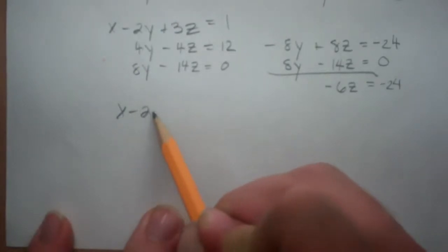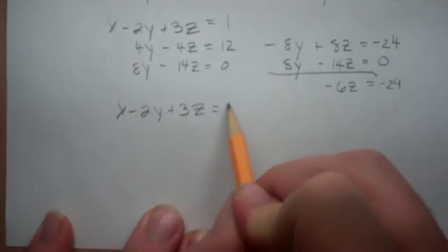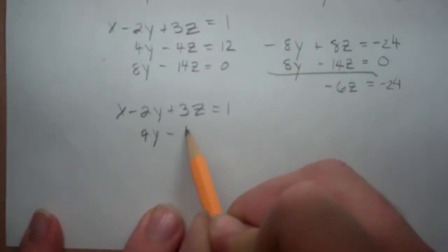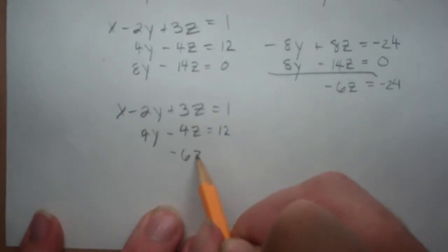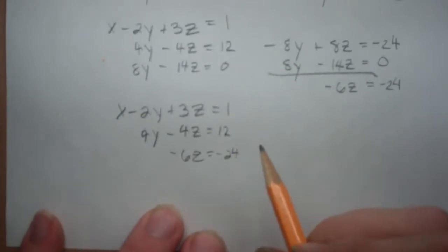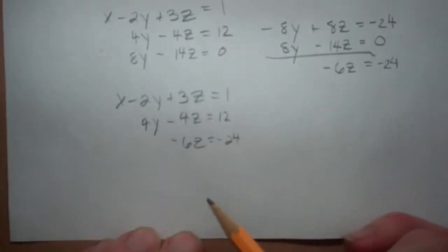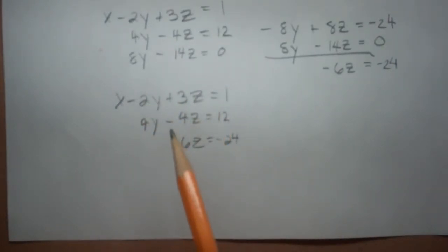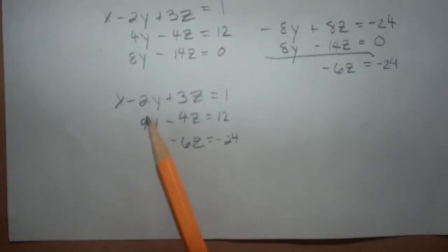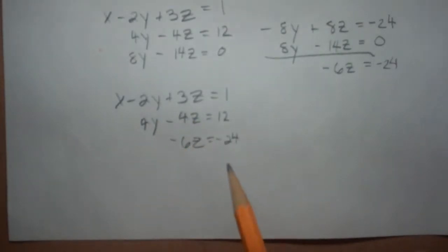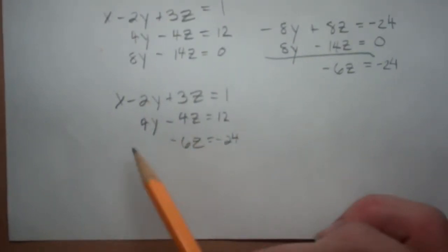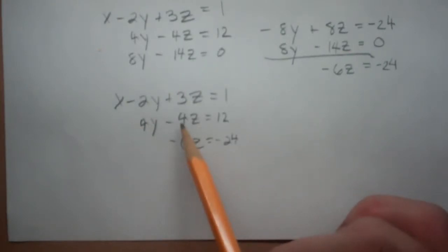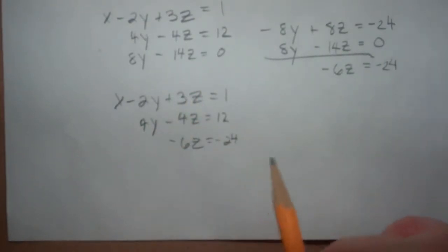Here we have our new equation for the bottom. So now we have x minus 2y plus 3z is equal to 1; 4y minus 4z is equal to 12; and our new bottom equation is negative 6z is equal to negative 24. This system is now in triangular form — three variables in the top, two in the middle, and one at the bottom. It will be a little easier if we divide through by common factors: we divide the middle by 4 and the bottom by negative 6.